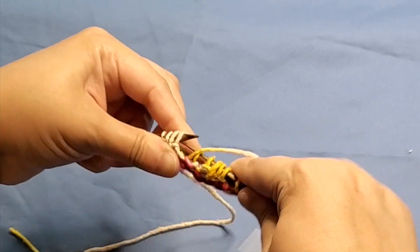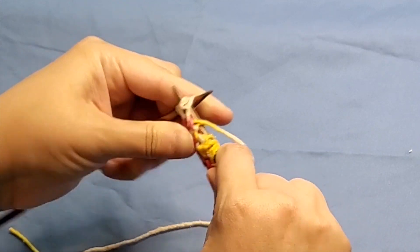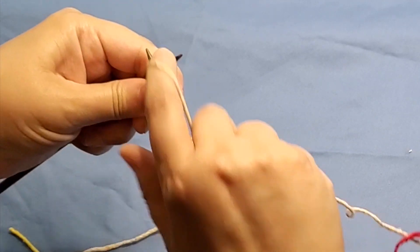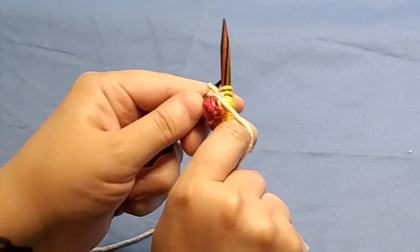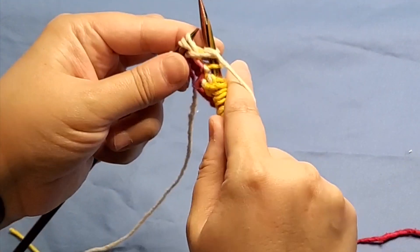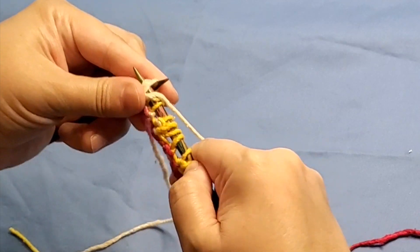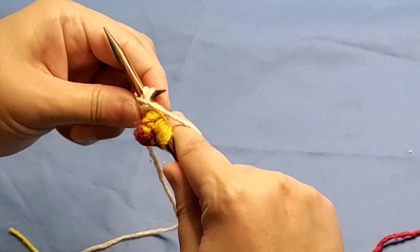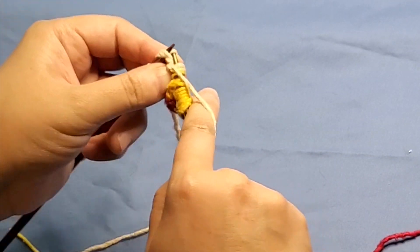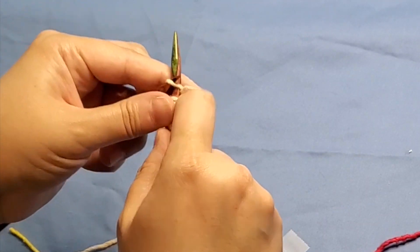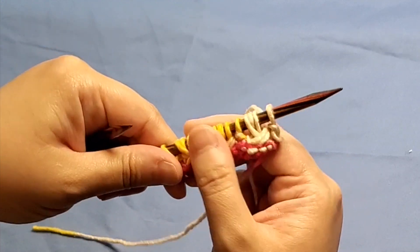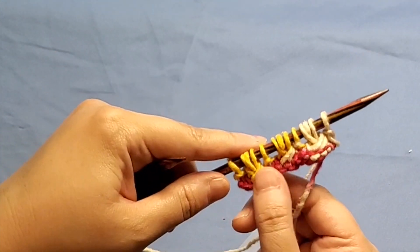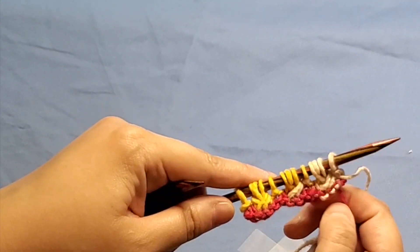Again, it's three. Purl three together. Do a yarn over. Purl three together again. And then you're going to end with a knit one. And even just doing that one row, you can kind of see where the stitches are bunched a little bit together.